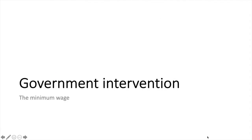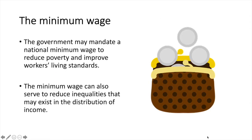The impact is similar with government intervention, specifically the minimum wage. Minimum wage set by the government is the legal minimum employers are required to pay their workers. The government may mandate a national minimum wage to reduce poverty and improve workers' living standards — by earning higher wages, living standards improve for workers. The minimum wage can also serve to reduce inequalities in the distribution of income, by forcing firms to pay out more to workers as opposed to shareholders.